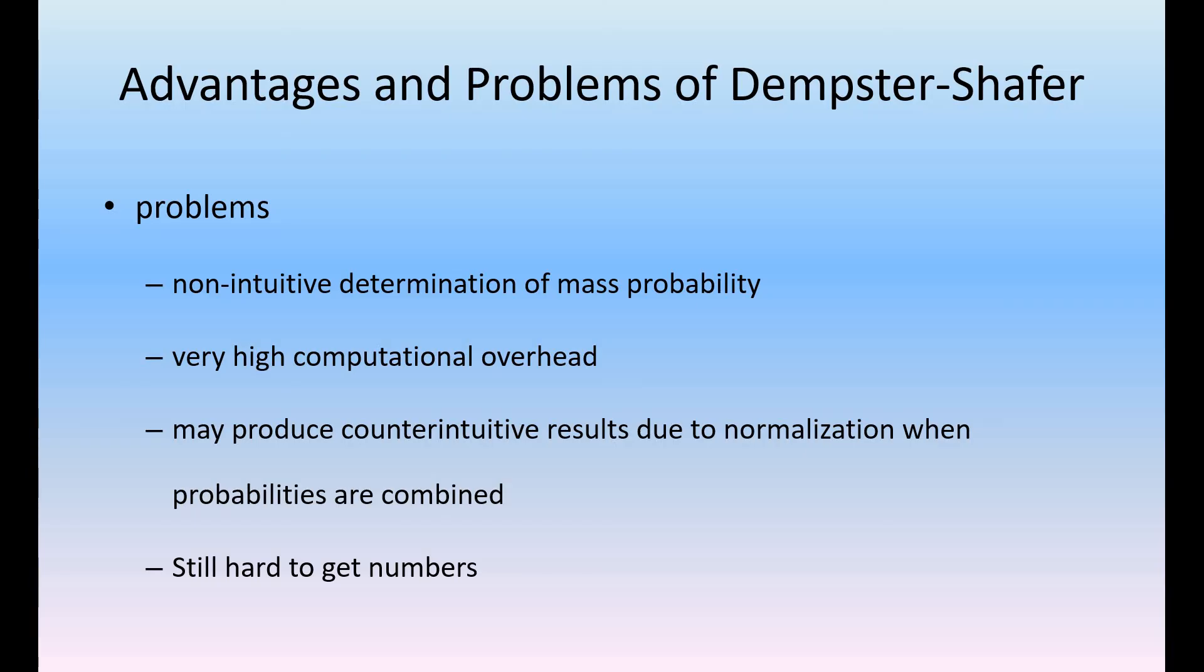What are the advantages and problems? It is very hard to get the numbers and it has very high computational overhead. We need to compute the power sets at each and every frame of discernment. It may produce counter-intuitive results due to normalization when probabilities are combined. Whenever more probabilities are combined, we have different kinds of results. Non-intuitive determination of mass probability. There are larger probabilistic values, so it is mass probability that results. All these are the overheads of Dempster-Shafer theory.